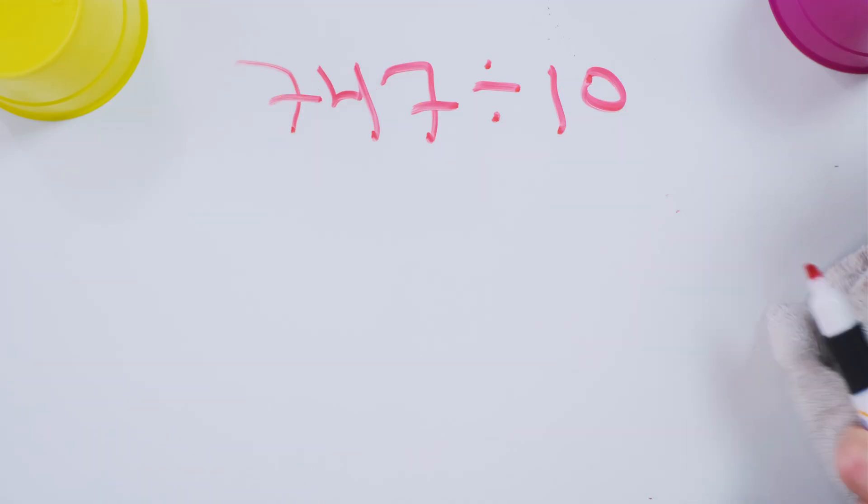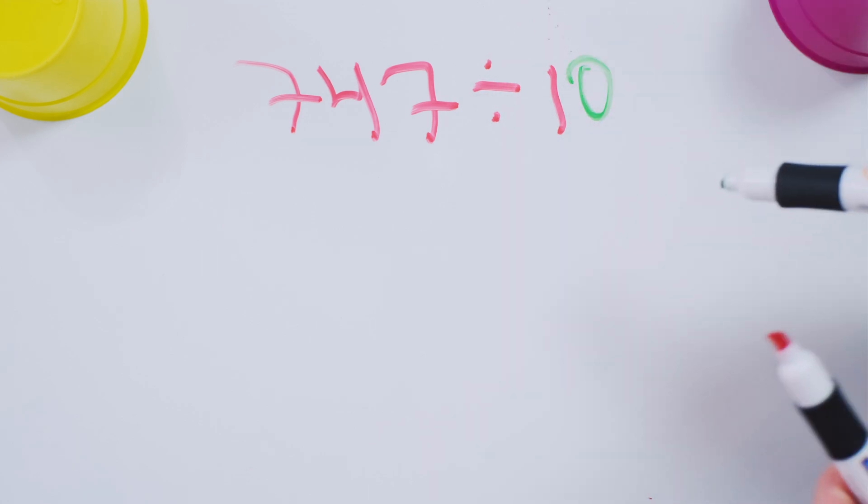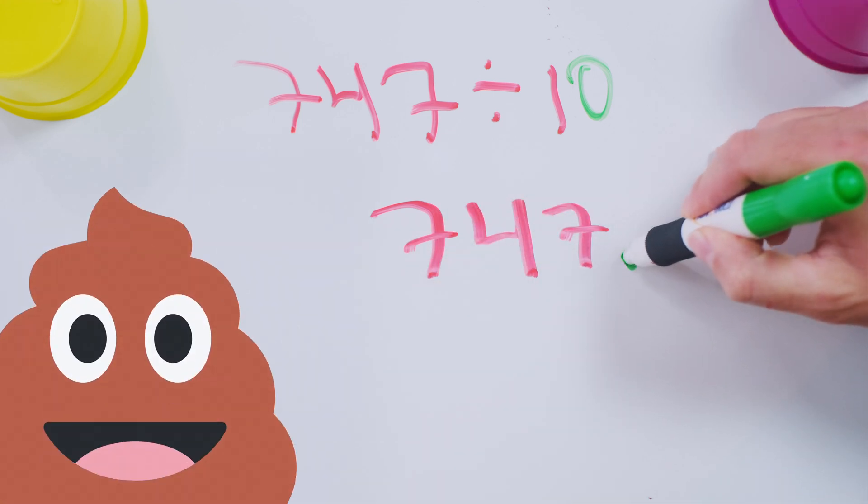If you're dividing a number by 10, that's got one zero. So you're just going to move the decimal place over one place. It's a positive number, so you go over one place.